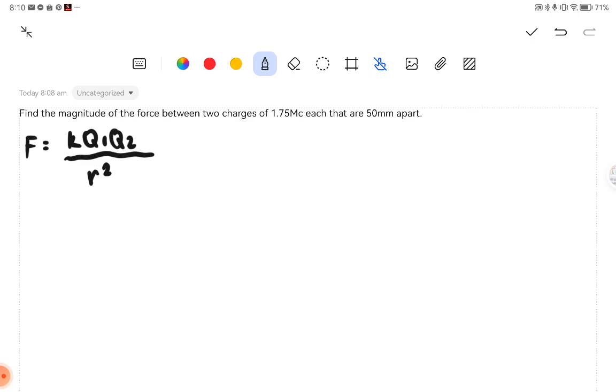Therefore, we have to know the SI unit for each. So we have F, or the magnitude, its SI unit is in Newton. Our Q, which is the charges, its SI unit is in Coulomb. And then our R, or our radius, its SI unit is in meter.